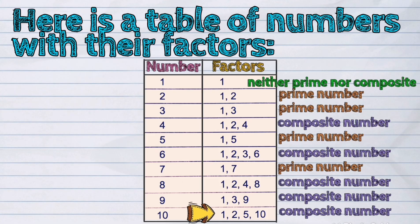Again, take note that prime numbers are numbers with exactly two distinct factors, one and itself. While composite numbers are numbers with more than two distinct factors.